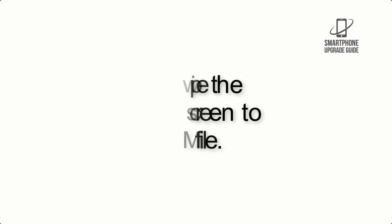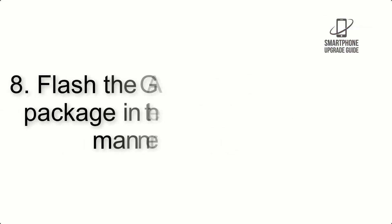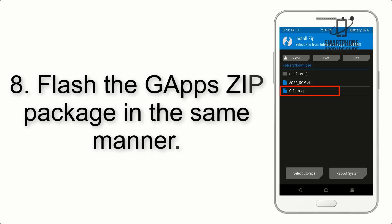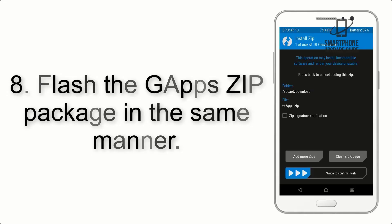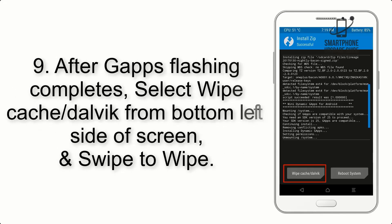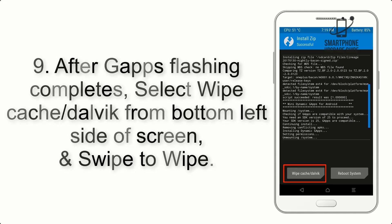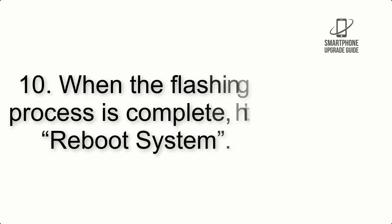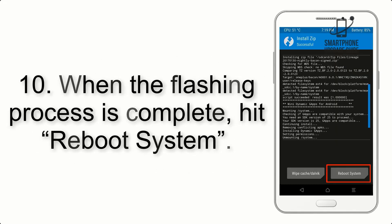Step 7: Swipe the button on the screen to install the ROM file. Step 8: Flash the GApps zip package in the same manner. Step 9: After GApps flashing completes, select Wipe Cache and Dalvik from the bottom left side of the screen and swipe to wipe.